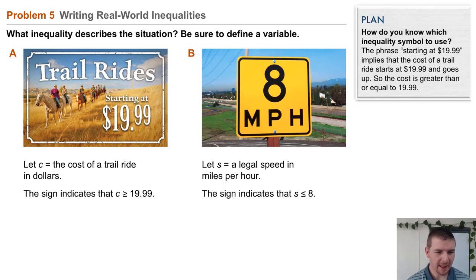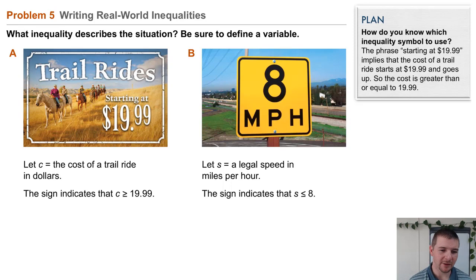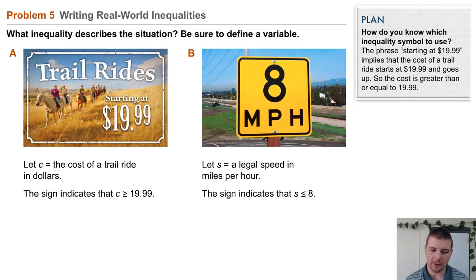So on the left, part A, we see trail rides starting at $19.99. We can let C, the variable C, represent the cost of a trail ride in dollars. The sign indicates to us that C is greater than or equal to $19.99.